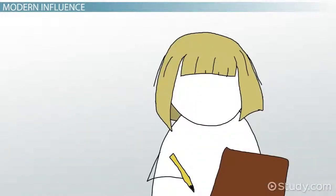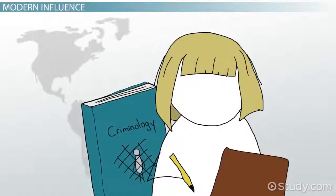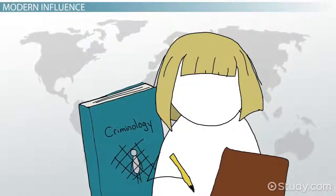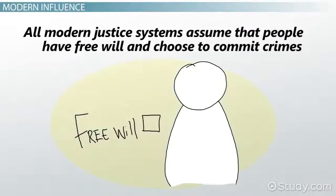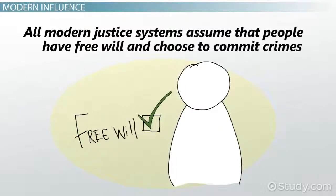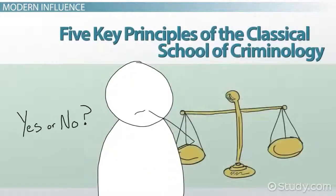The reason much of the Classical School's principles are familiar to Jordan is because it has had a major impact on our modern judicial system. All modern justice systems assume that people have free will and choose to commit crimes. This is a direct descendant of the Classical School principles.